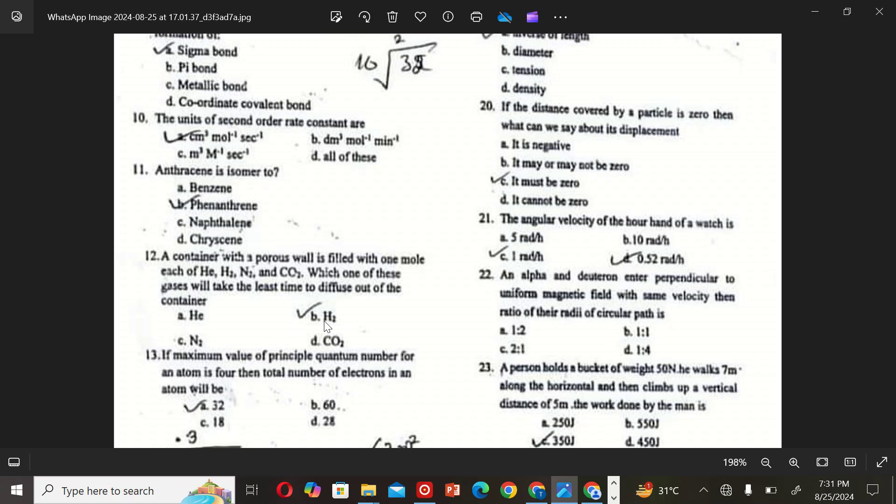The next MCQ is: Maximum value of principal quantum number of 4 or an atom is 4. The total number of electrons in an atom will be A: 32, B: 60, C: 18, and D: 28. So the correct option is A, 32.